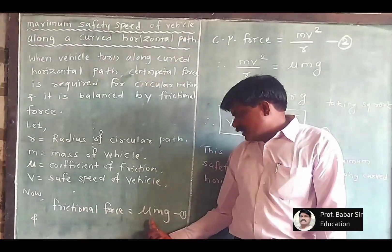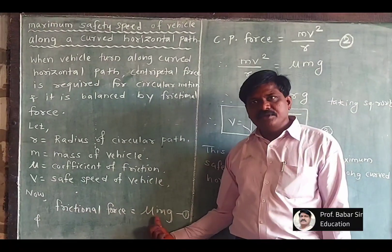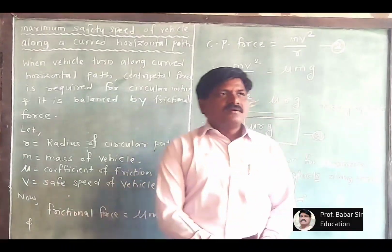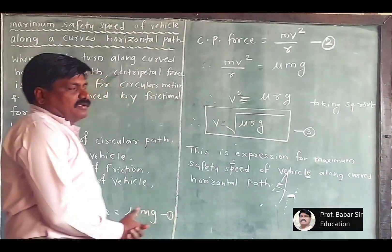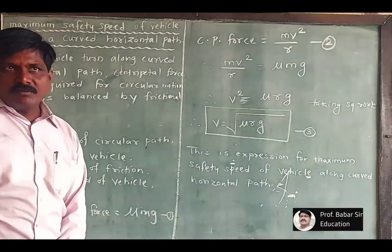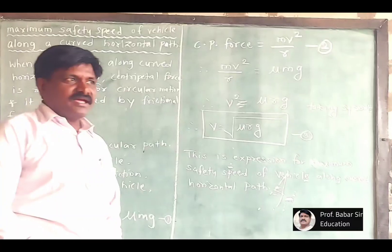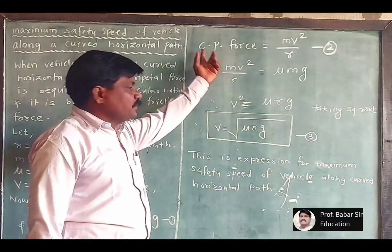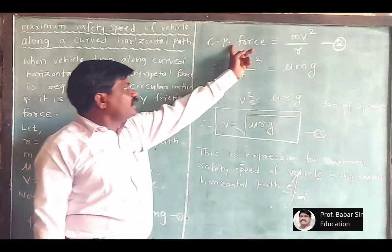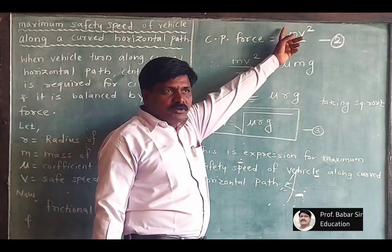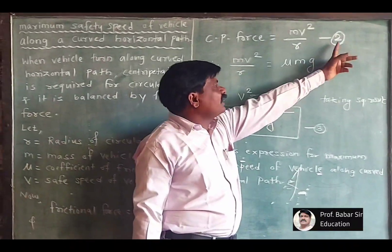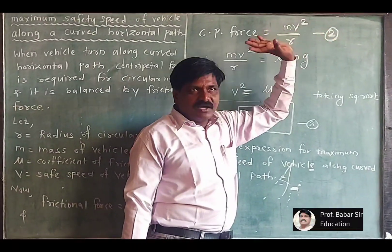Centripetal force is given by the formula μmg, named as equation number 1. For a body performing circular motion, the centripetal force formula is mv² upon r, named as equation number 2.